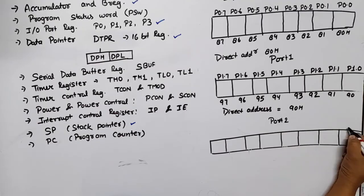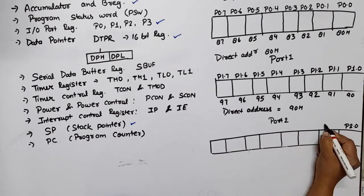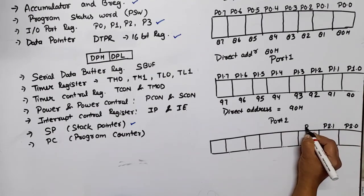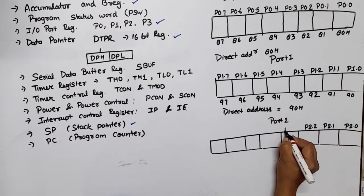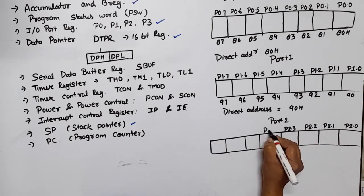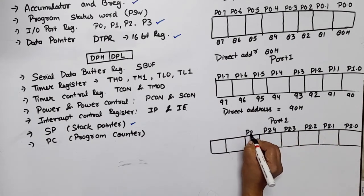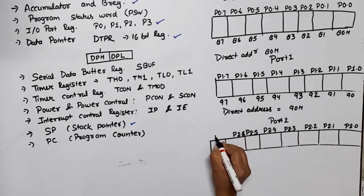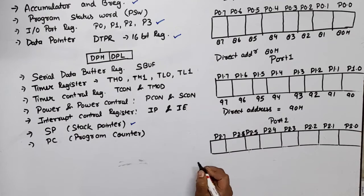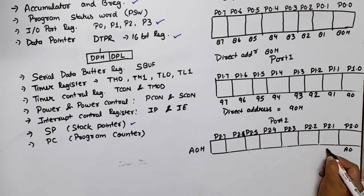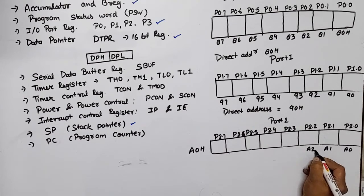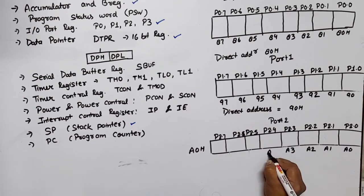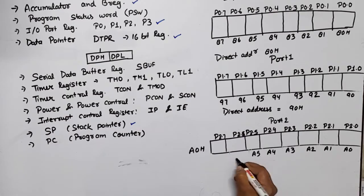For Port 2, the bits are: P2.0, P2.1, P2.2, P2.3, P2.4, P2.5, P2.6, and P2.7. The direct address of Port 2 is A0h, and bit-wise addresses are A0, A1, A2, A3, A4, A5, A6, and A7.